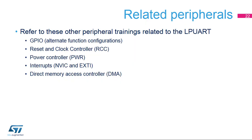This is a list of peripherals related to the LP UART. Please refer to these peripheral trainings for more information if needed: General Purpose Input Output, Reset and Clock Controller, Power Controller, Interrupts Controller, and Direct Memory Access Controller. Thank you.